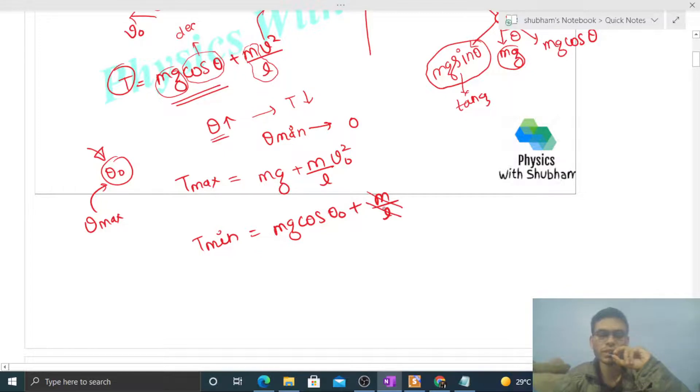Now what is given is that maximum tension is twice the minimum tension. So just put the values. mg plus m by L into v naught square is twice of mg cos theta naught.